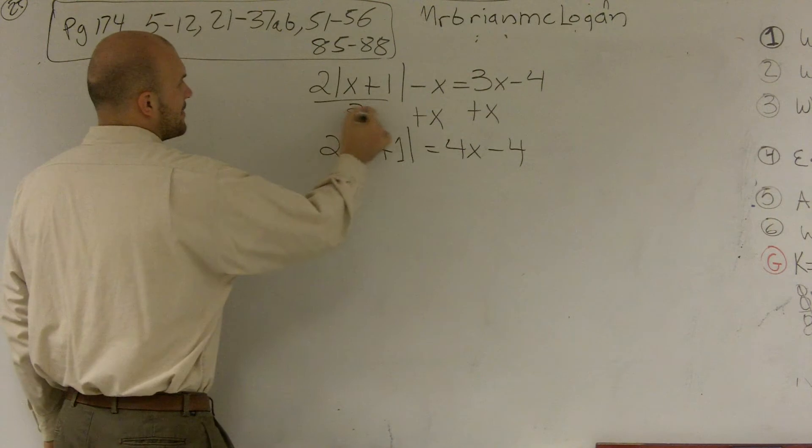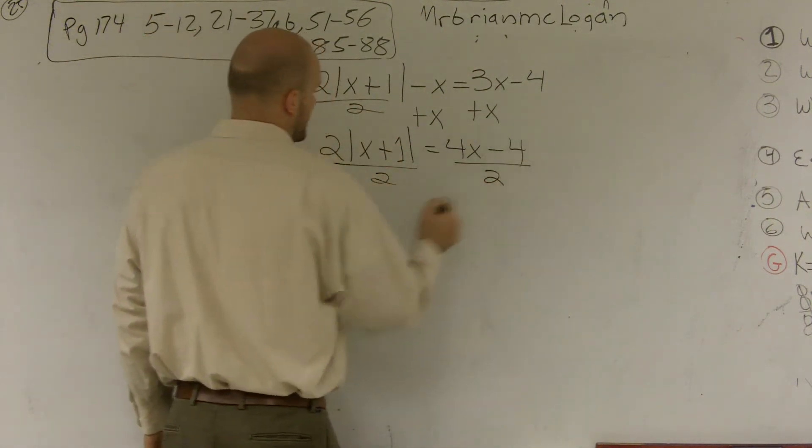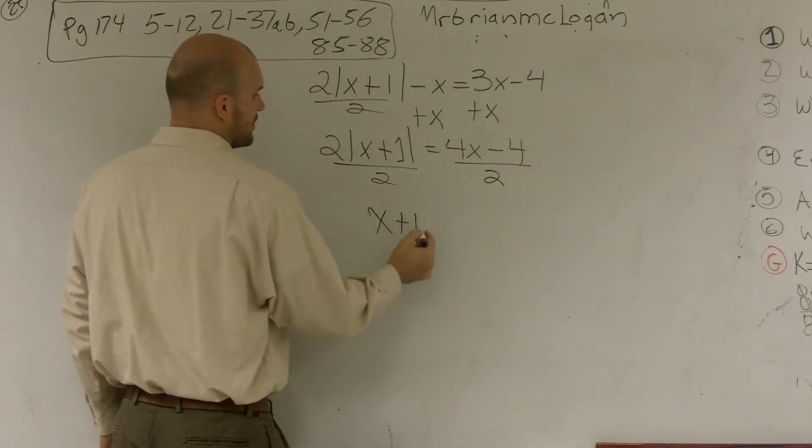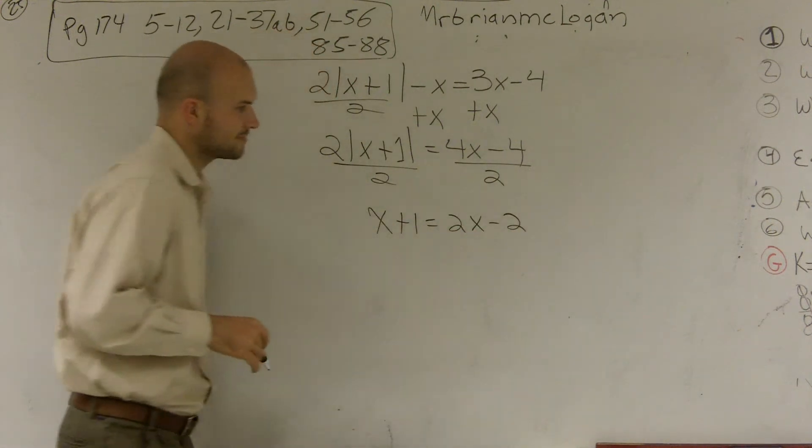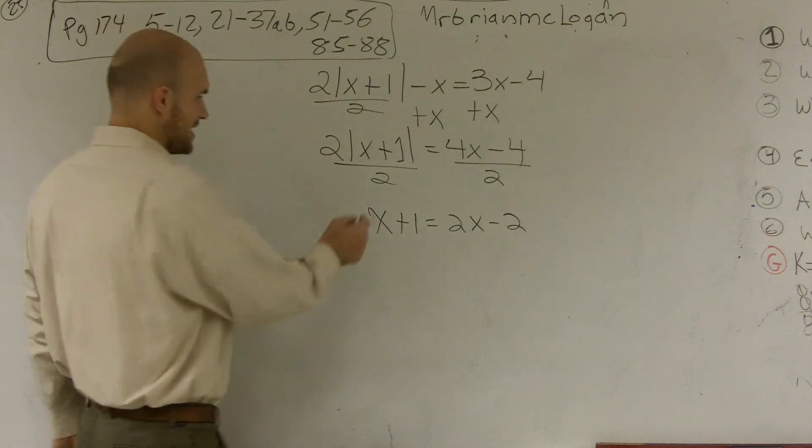Now, I can divide by 2, and I'm left with x plus 1 equals 2x minus 2. Now, I'm sorry, absolute value of x plus 1 equals 2x minus 2.